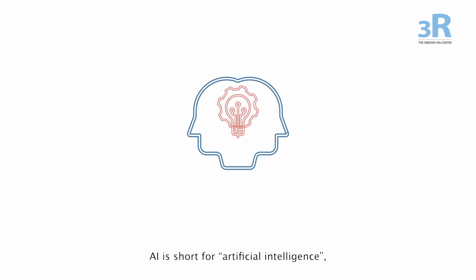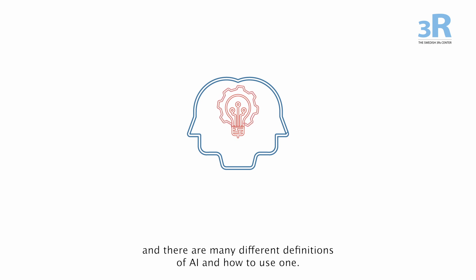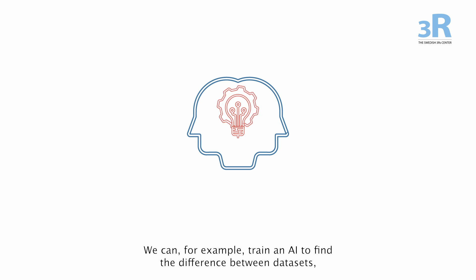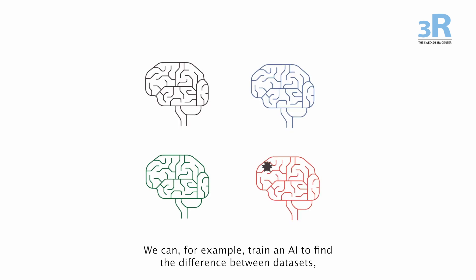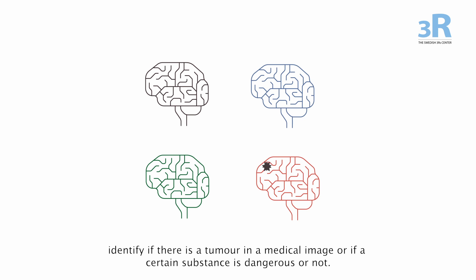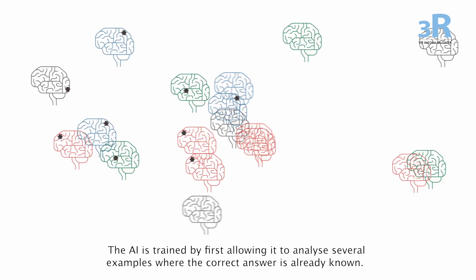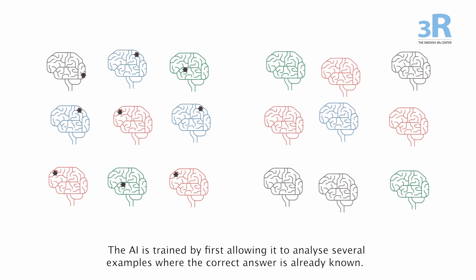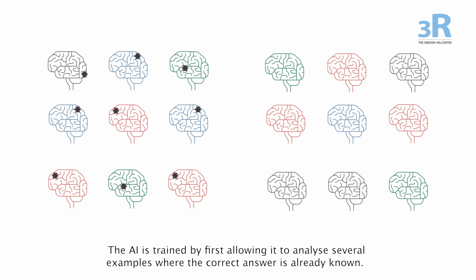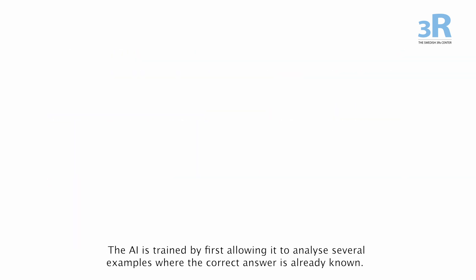AI is short for artificial intelligence, and there are many different definitions of AI and how to use one. We can, for example, train an AI to find the difference between data sets, identify if there is a tumour in a medical image, or if a certain substance is dangerous or not. The AI is trained by first allowing it to analyse several examples where the correct answer is already known.